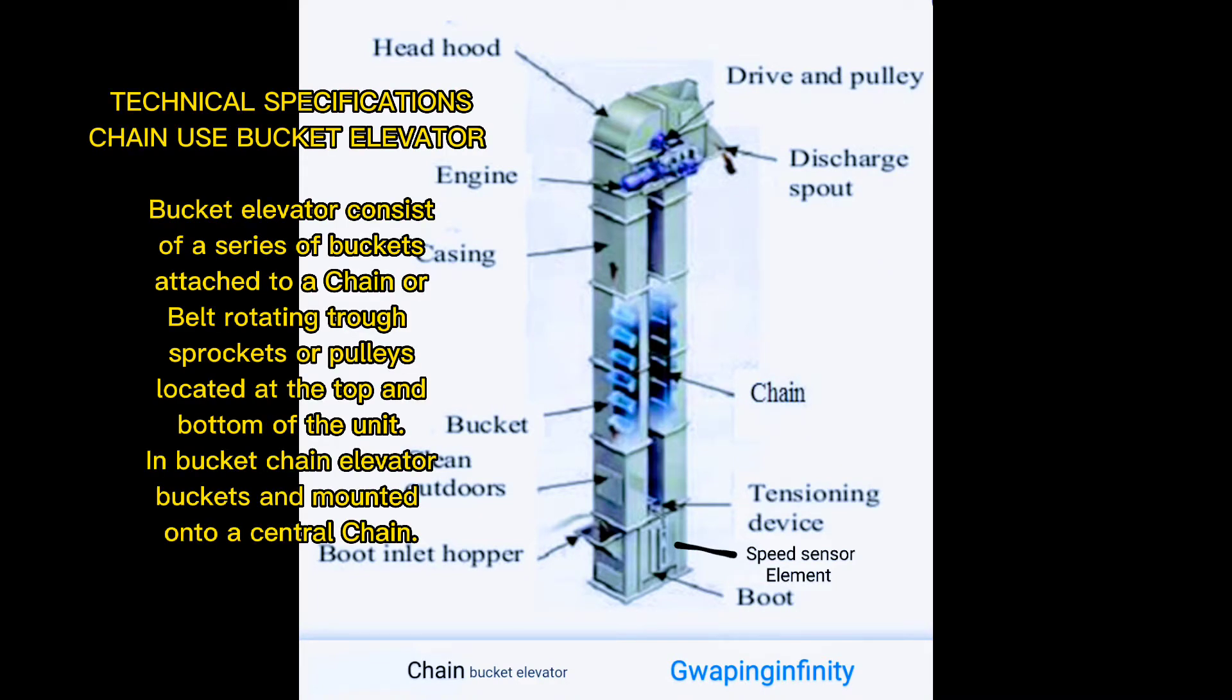Technical Specifications Chain U.S.E. Bucket Elevator. Bucket Elevator consists of a series of buckets attached to a chain or a belt rotating through sprockets or pulleys, located at the top and bottom of the unit. In bucket chain elevator, buckets are mounted onto a central chain.